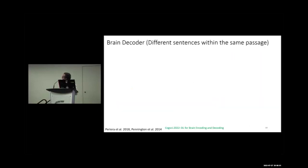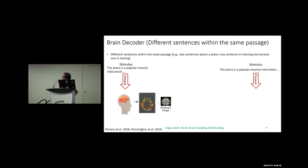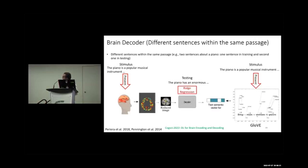The third experiment uses different sentences within the same passage: sentences are from the same topic (e.g., piano), and both training and testing draw sentences from the same passage.